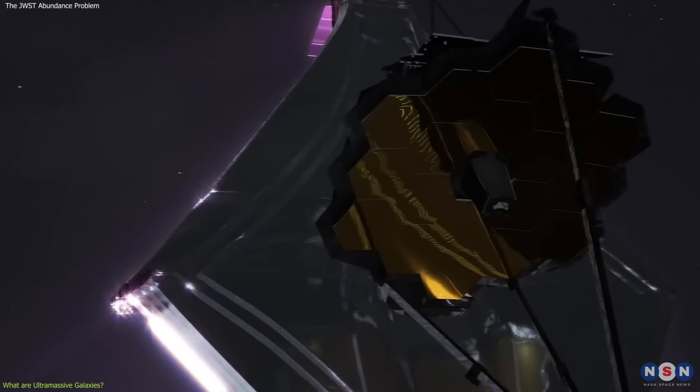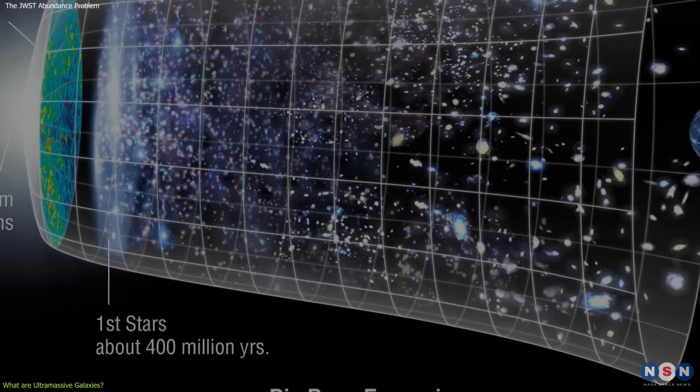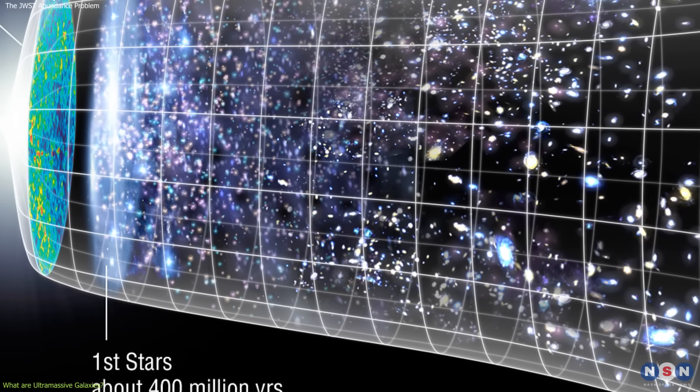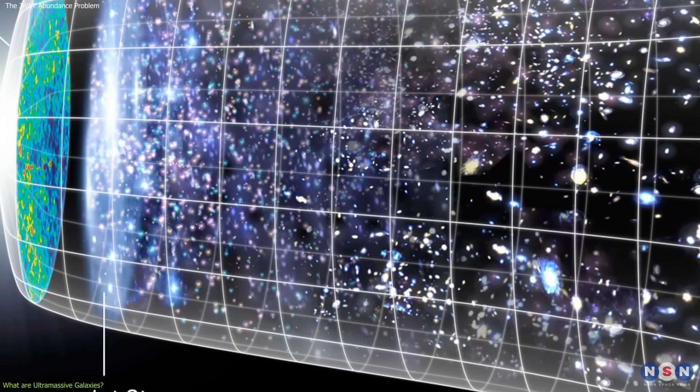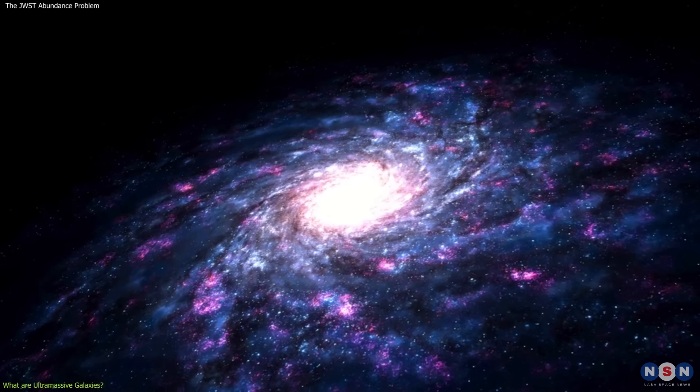But James Webb has detected six ultramassive galaxy candidates in the early universe, when the universe was only about 800 million years old, or less than 6% of its current age.